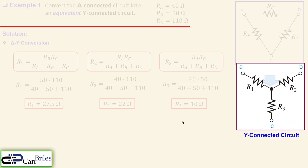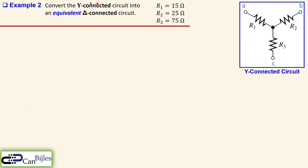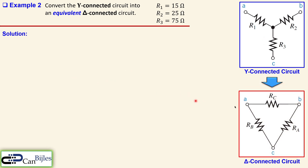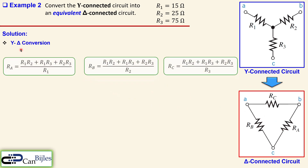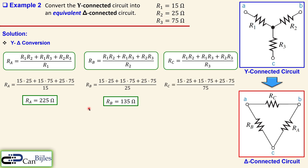Example 2 goes the other direction. Given R1 equals 15, R2 equals 25, and R3 equals 75 in a Y connection, we need to convert to an equivalent delta connection. Using the Y-to-delta formulas and substituting the values, we get RA equals 225 ohms, RB equals 135 ohms, and RC equals 45 ohms.